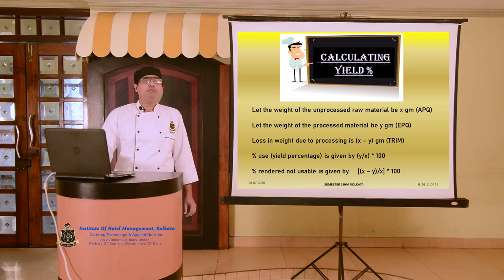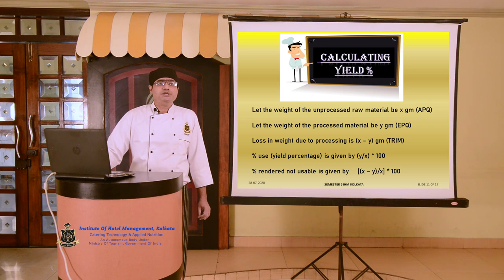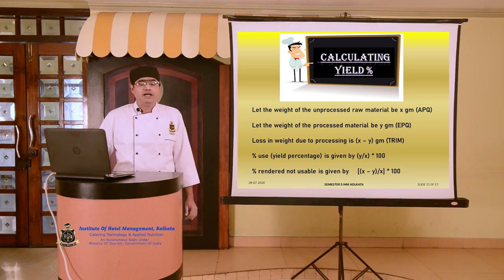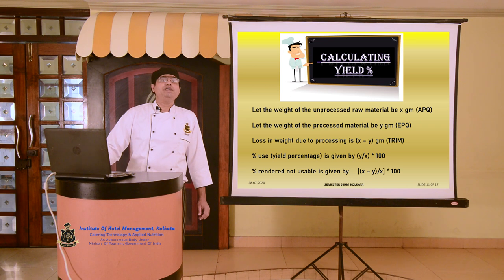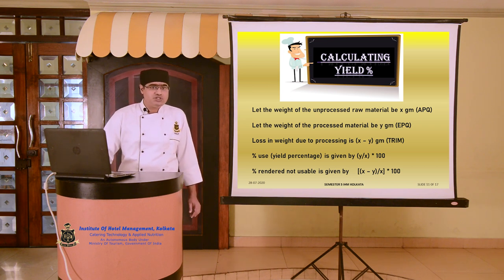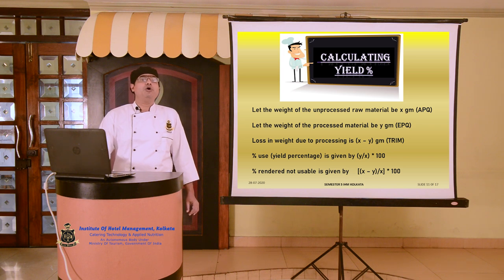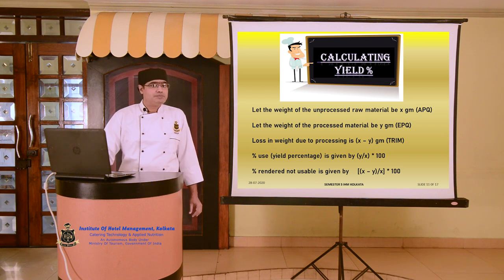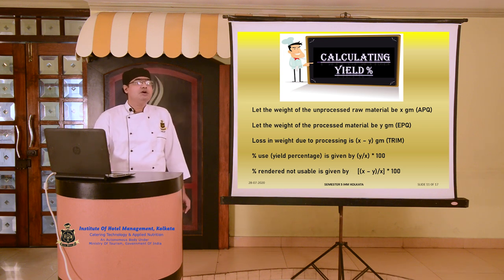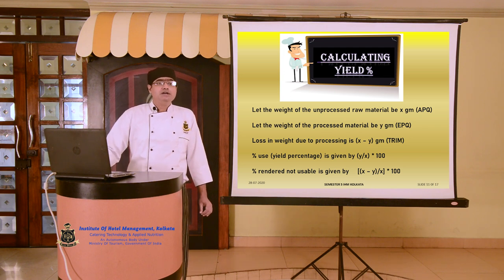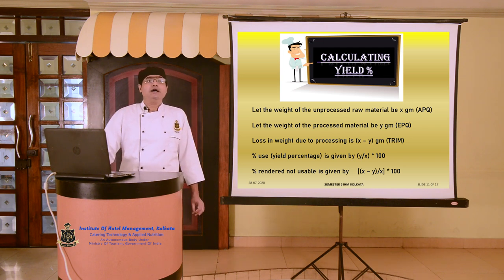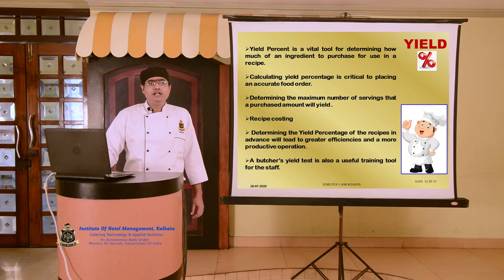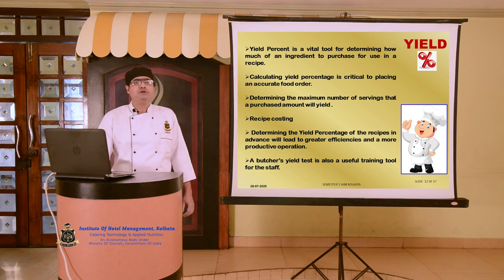When we are calculating the yield percentage, it is EPQ divided by APQ multiplied by 100 — that is, whatever we have served ultimately on the platter of the guest divided by whatever we originally received, multiplied by 100. That gives the yield percentage. If we want to find out the trim percentage, we calculate it by dividing the trim by the APQ and multiplying by 100. Having understood in a simple way how to calculate yield percentage, let us focus on its significance.